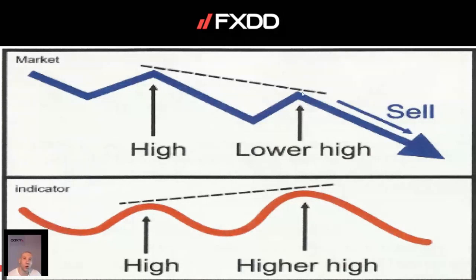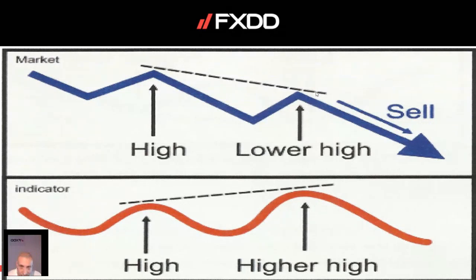Remember, this is very important — because I have heard totally nonsense things about divergence. A few traders told me that when they see hidden divergence, they counter the trend. It's false. Hidden type of divergence is trend continuation, not reversal. Only regular divergence is a reversal type.